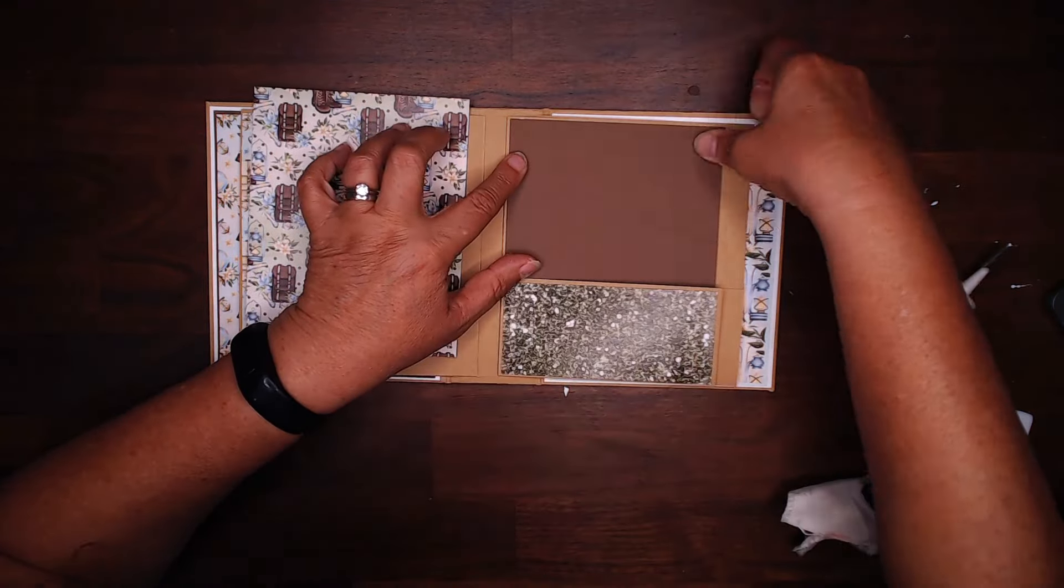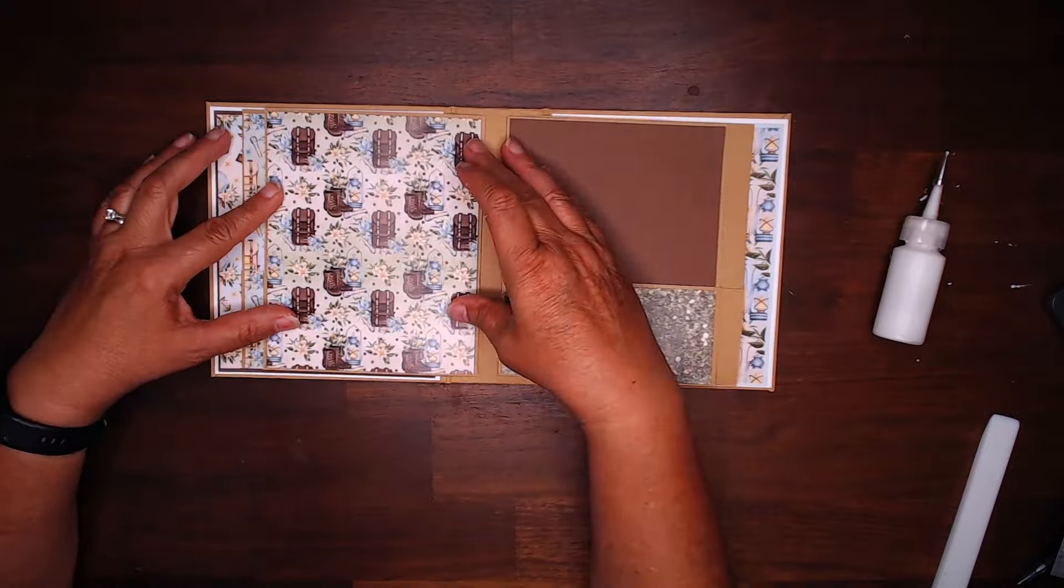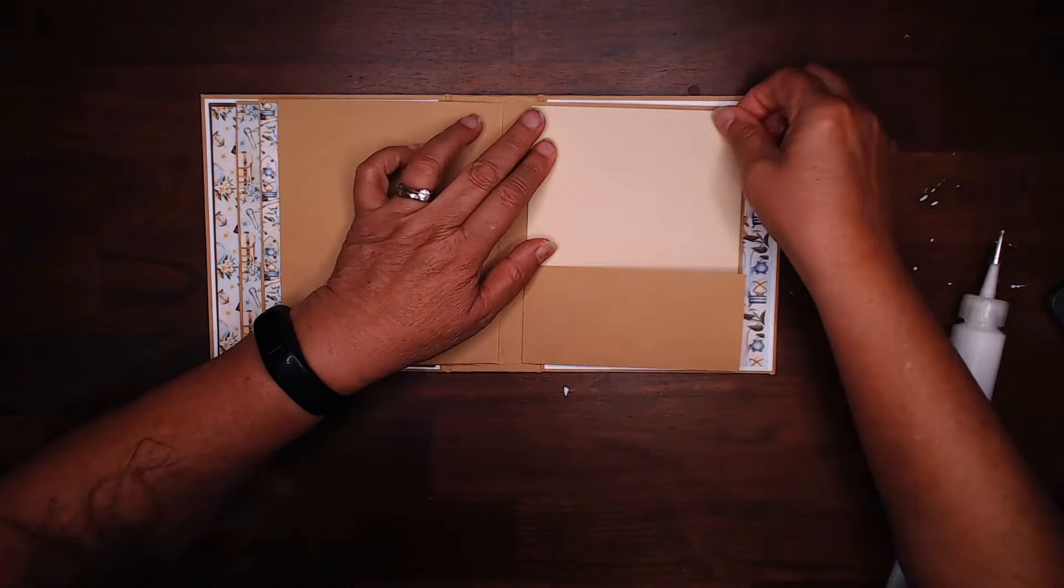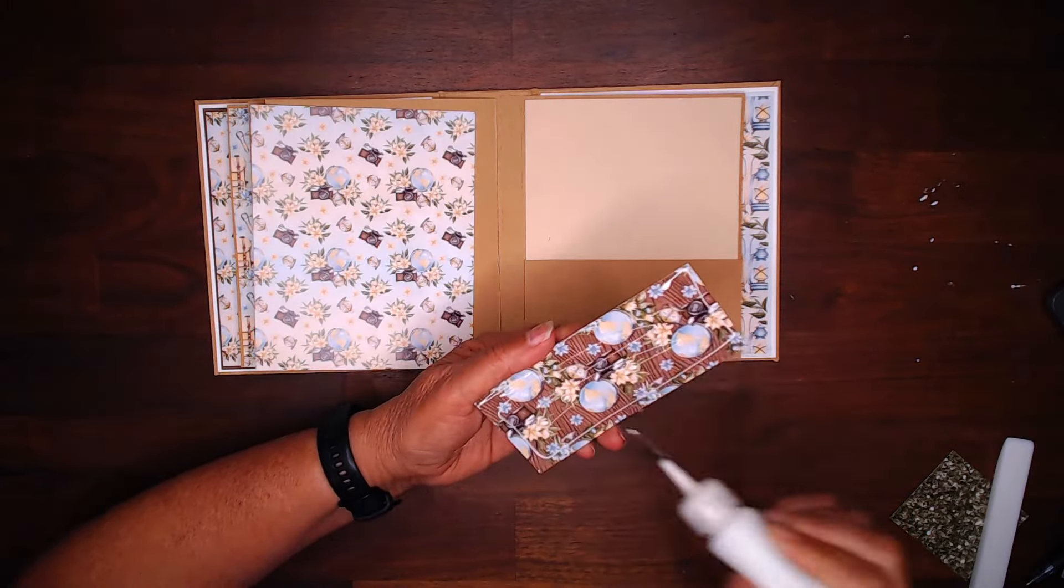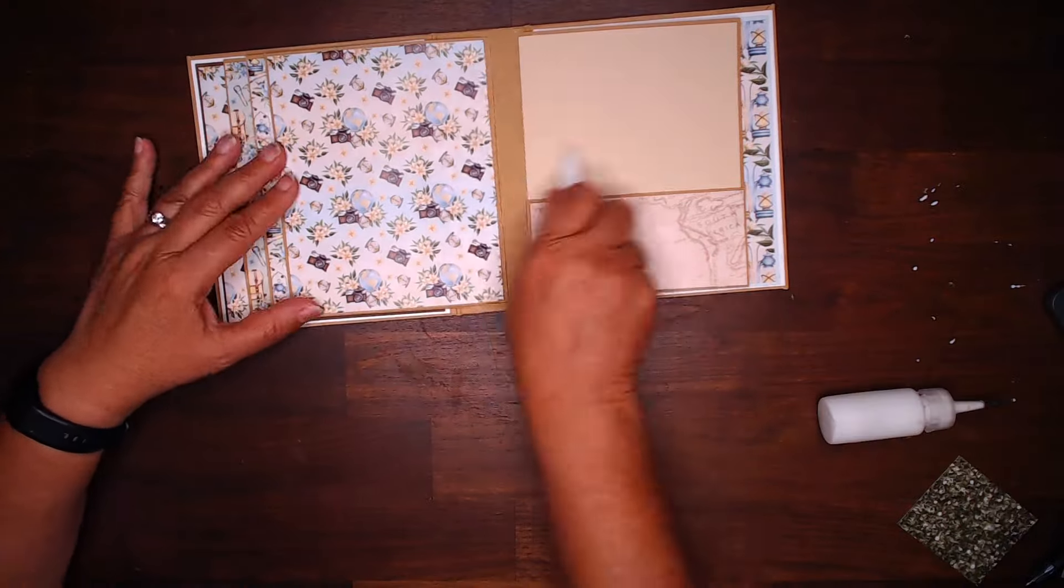So, here's the dark brown, then glue that little piece down. And I try to coordinate the pages from the left side to the right side. Sometimes they match, sometimes they don't. But, of course, since you're using this collection, everything does coordinate. You've got all the same colors throughout.